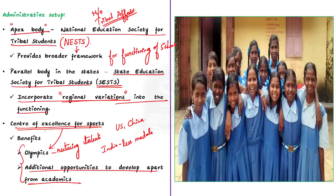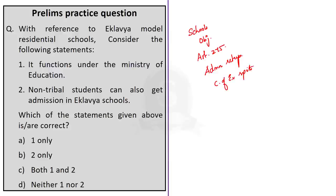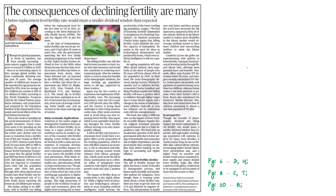That's all regarding this discussion. We saw about Eklavya schools and their objective. We took a small detour and saw what Article 275 is. Finally, we saw the administrative setup of the schools and the Center of Excellence for Sports. With these key points, let us move on to the next article discussion.